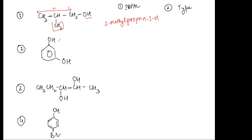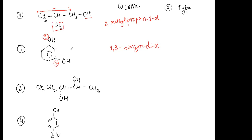Second compound: a benzene ring with two OH groups. In IUPAC nomenclature, positions are always given by numbers. This is going to be benzene-1,3-diol. There are two OH groups: one at position one, and the second at position three.